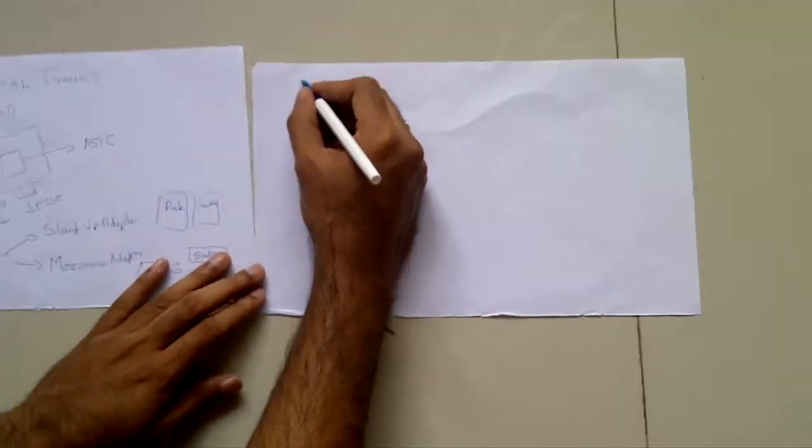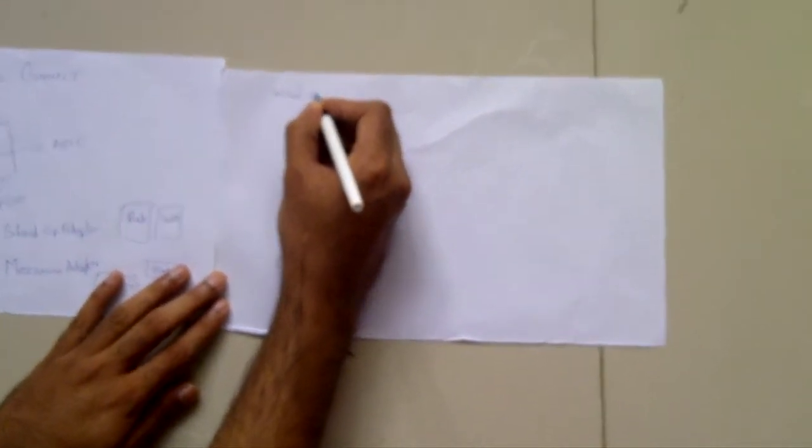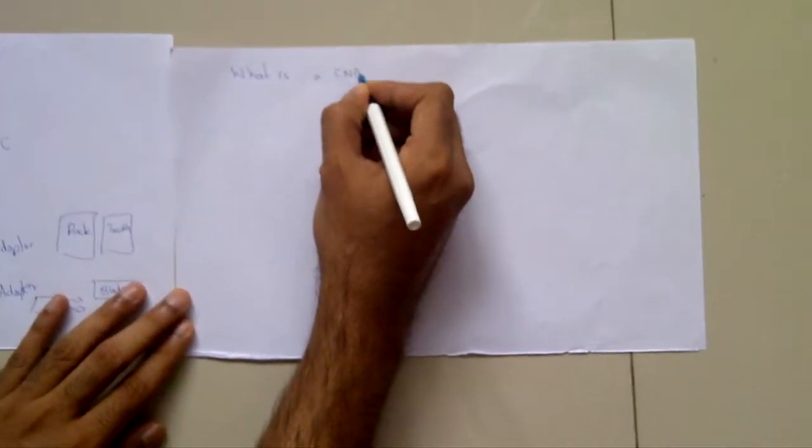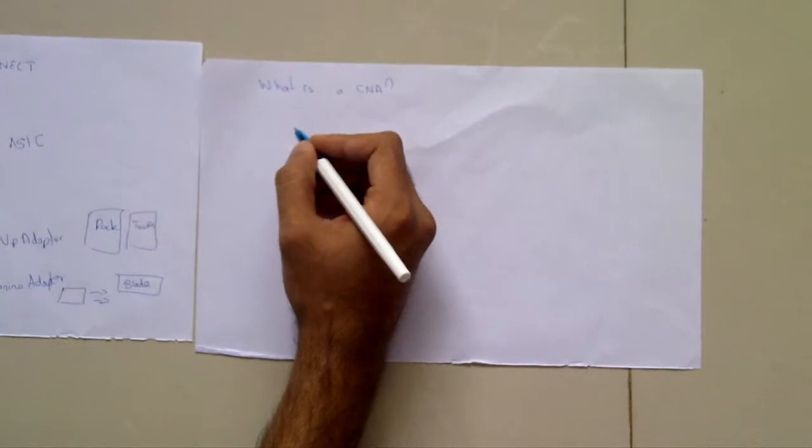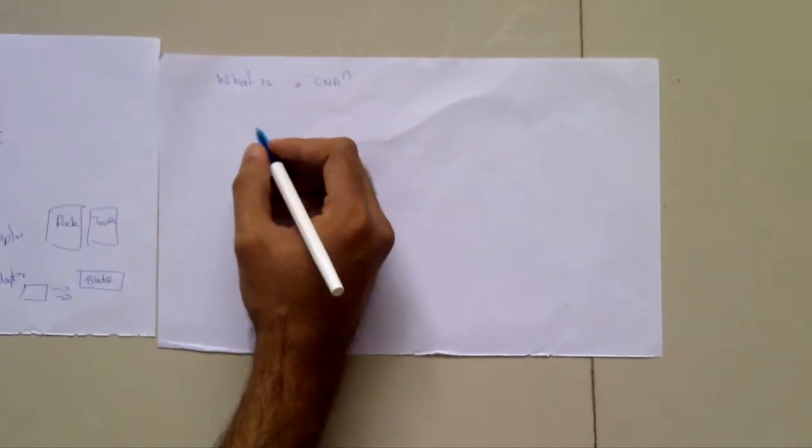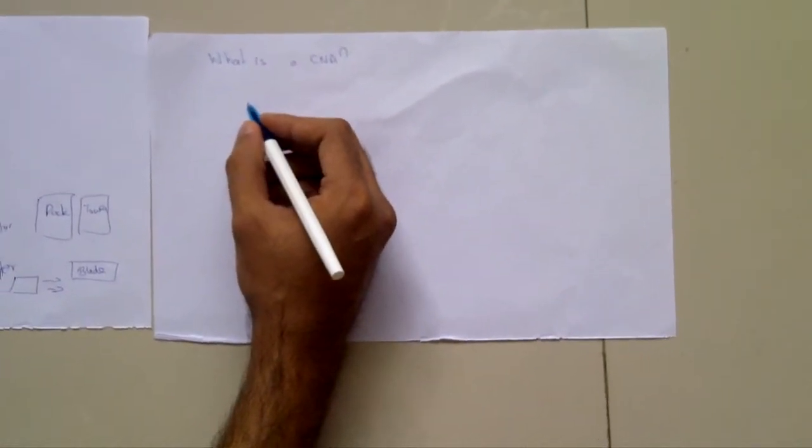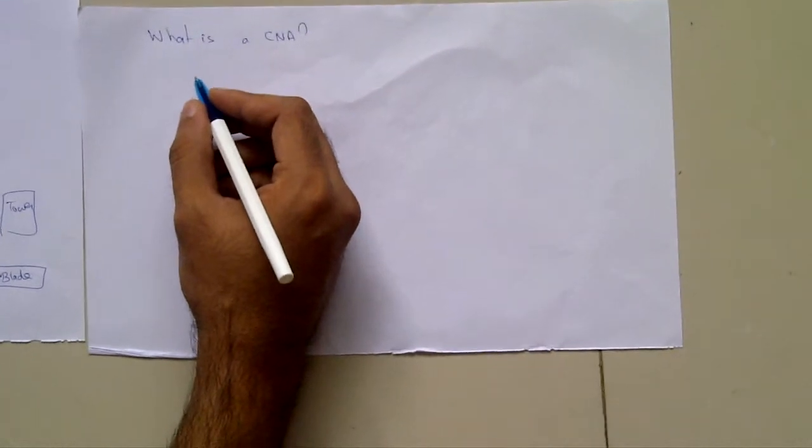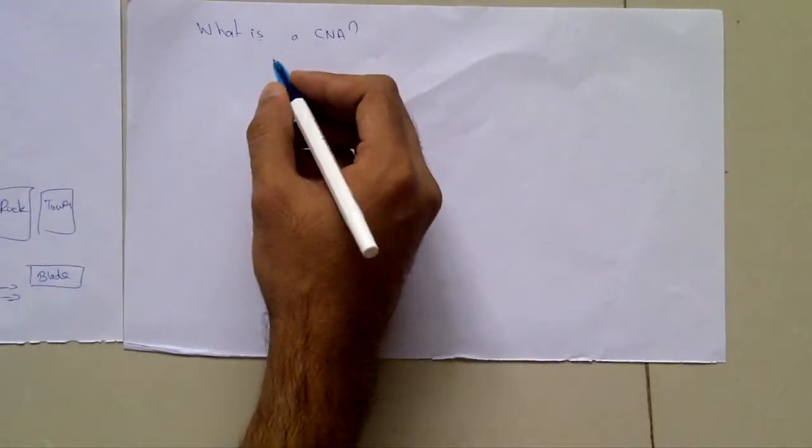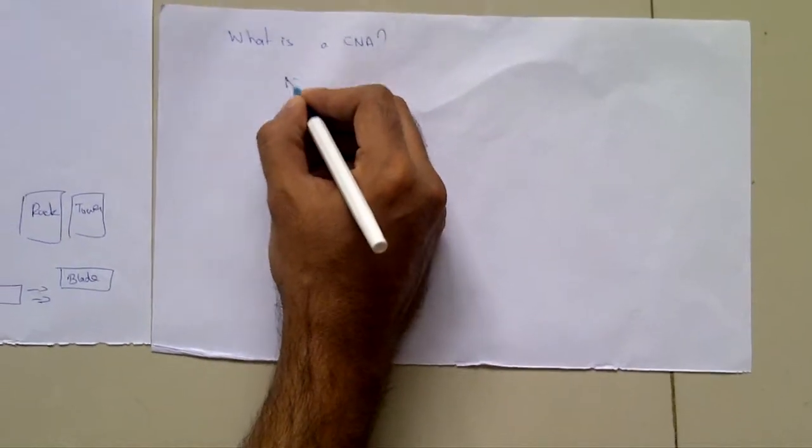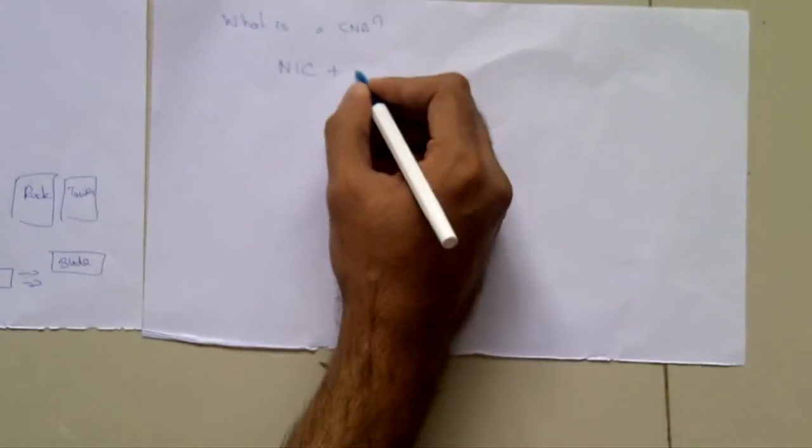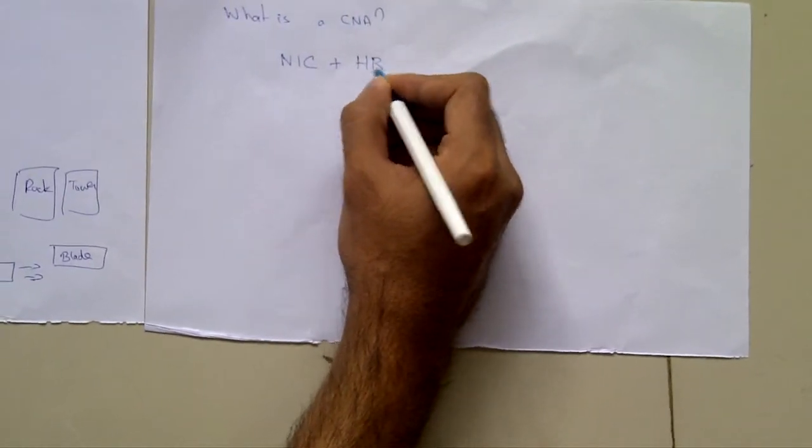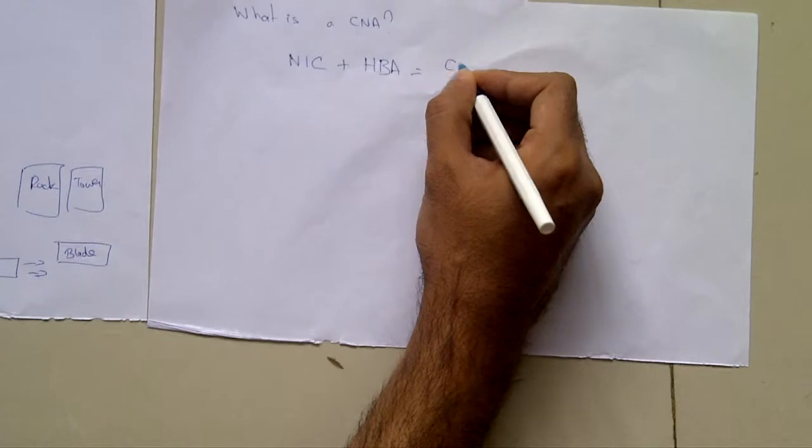Now what exactly is a CNA? A converged network adapter is a single network interface card that contains both a fiber channel host bus adapter and a TCP IP Ethernet NIC network interface card. So a NIC plus an HBA is equal to a CNA. It connects servers to FC based storage area networks and Ethernet based local area networks.